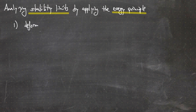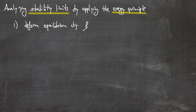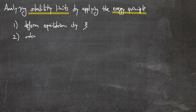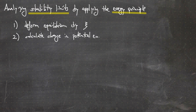First, we take an equilibrium and perturb or deform it by a small perturbation — we use the letter psi for that. Second, we calculate the change in potential energy due to that perturbation.